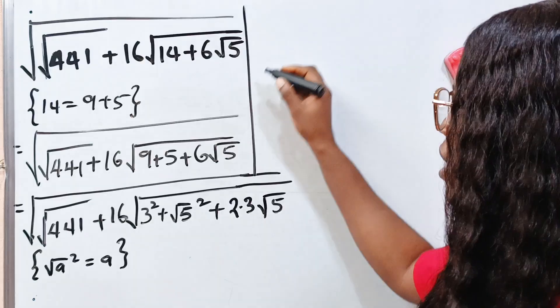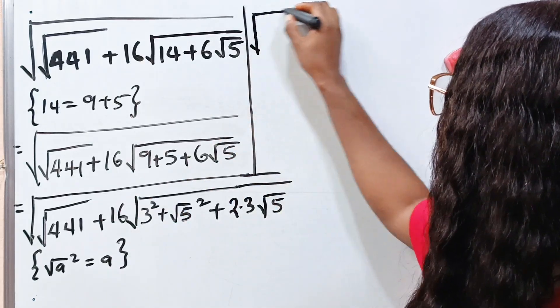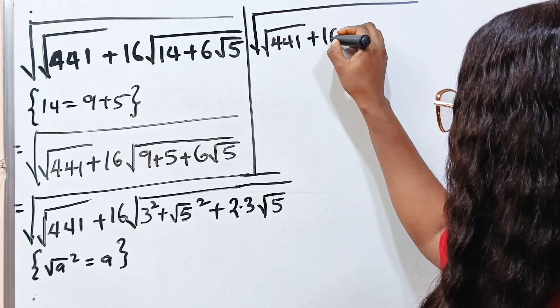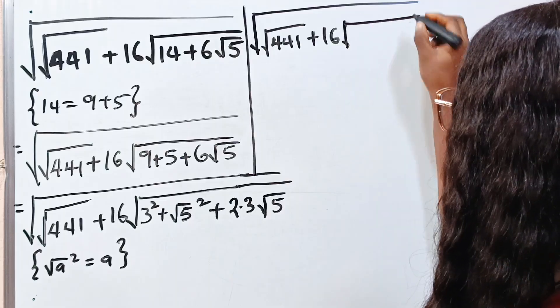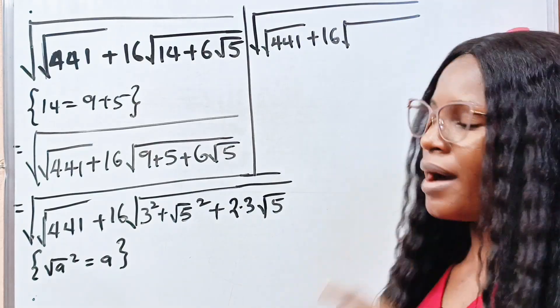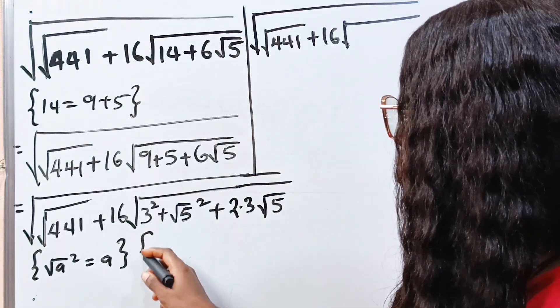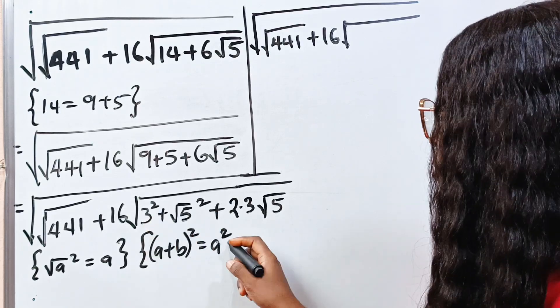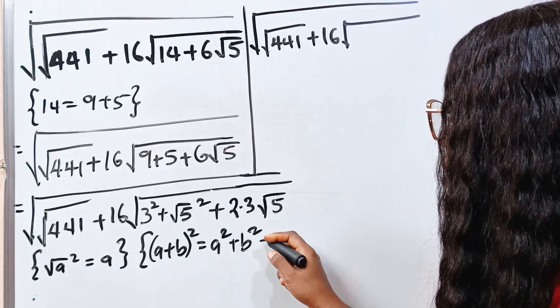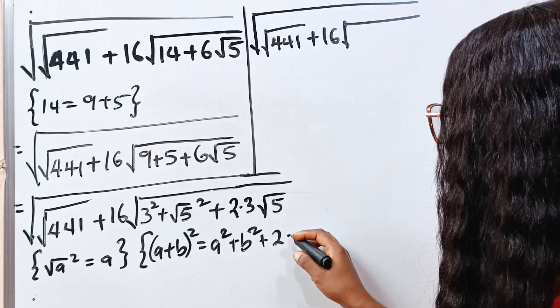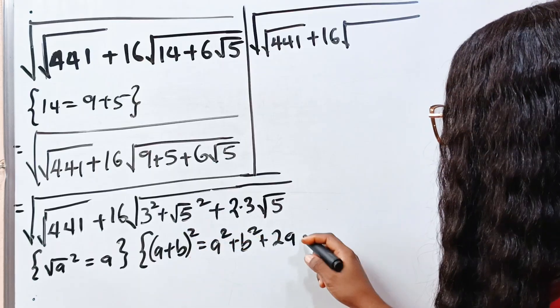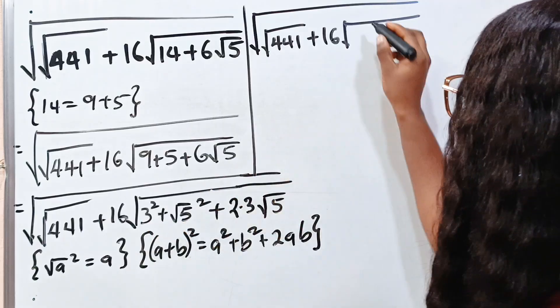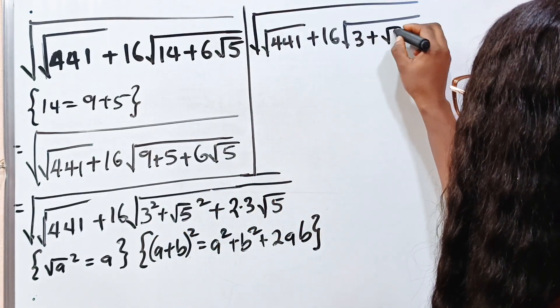Back to what we are doing. We have the square root of the square root of 441 plus 16 roots. Now remember, let me open it here. A plus B squared, I told you this is always our target. It is equal to A squared plus B squared plus 2 multiplied by A, A being 3, multiplied by B, B being root 5. So that means we can write it to be A plus B squared, that is 3 plus root 5 squared.